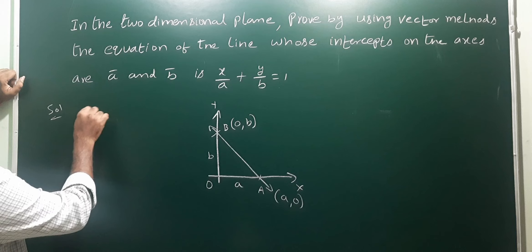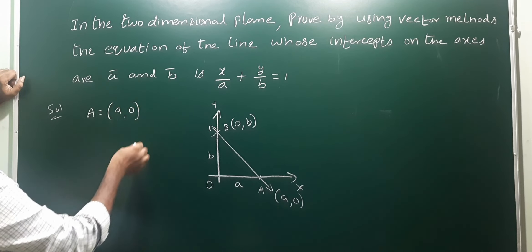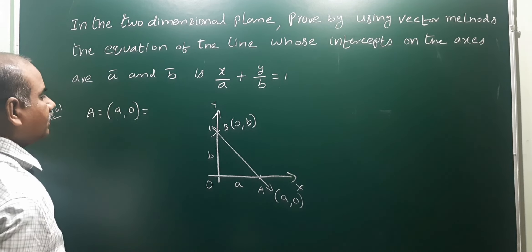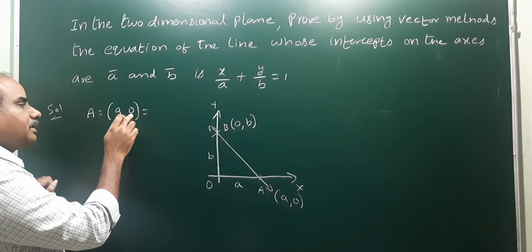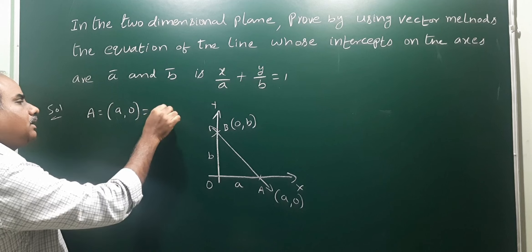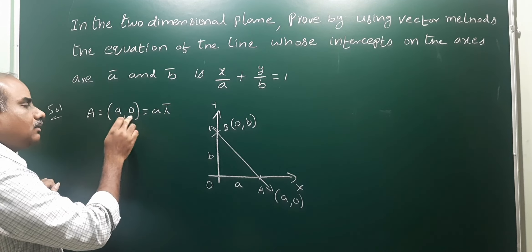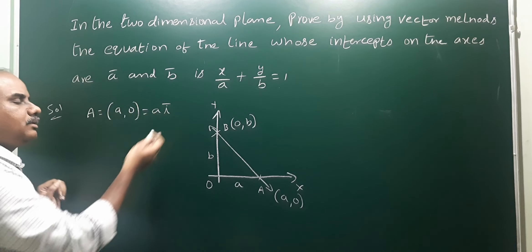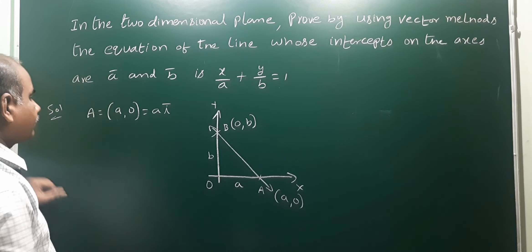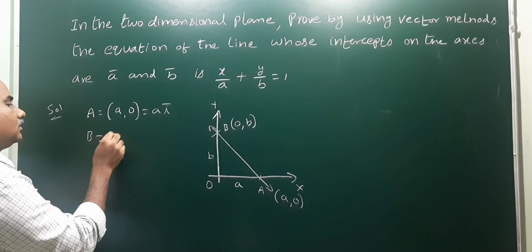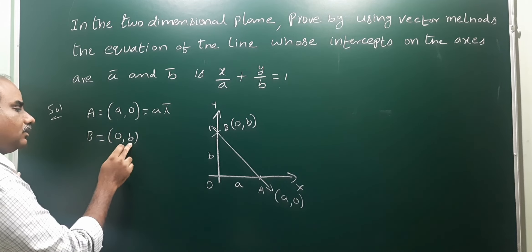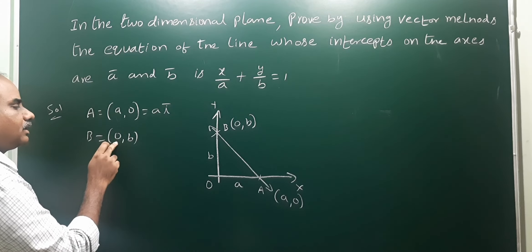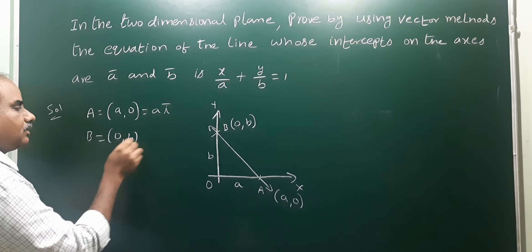Now we represent these points as vectors. Point A is (a, 0), so its position vector is a·ī + 0·j̄, giving ā = aī. Point B is (0, b), so its position vector is 0·ī + b·j̄, giving b̄ = bj̄.